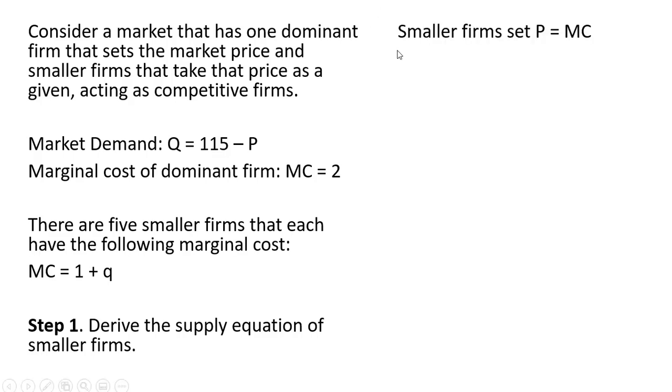So the smaller firms are going to act as price takers. So a price taker will set price equal to marginal cost to maximize profit. So I'm going to take this marginal cost equation where I have MC, I'm going to replace that with P for price. And now I'm going to solve this equation for Q. And that is the competitive firm's supply equation. Give me a price, and I'll tell you the profit maximizing output of the firm.